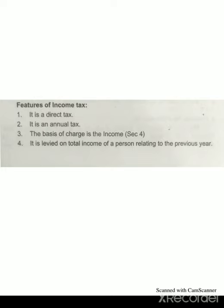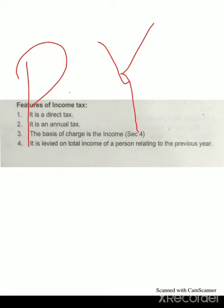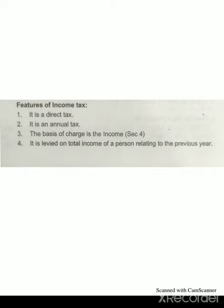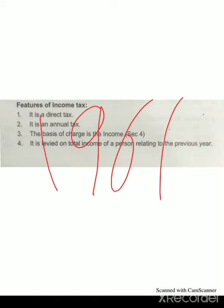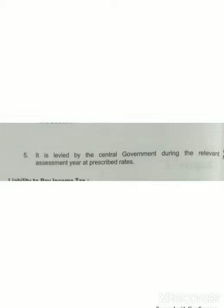The fourth feature is it is levied on the total income of a person relating to the previous year. Previous year means last year — whatever was earned in the previous year, on the basis of that year's income, income tax under the Income Tax Act 1961 is imposed. The next characteristic is it is levied by the central government during the relevant assessment year at a prescribed rate. This tax is collected by the central government and is not shifted to any other person, and there is a specific rate of income tax to be paid.